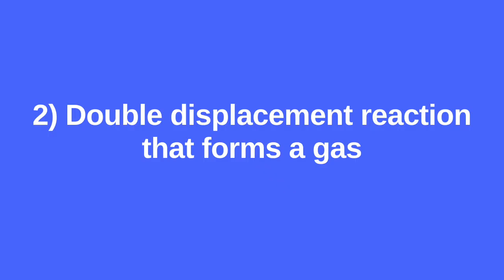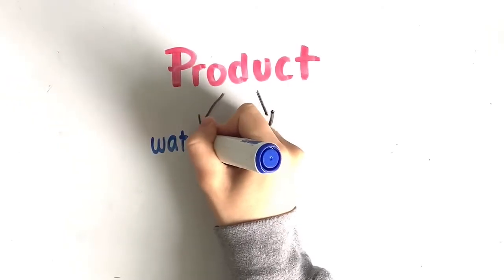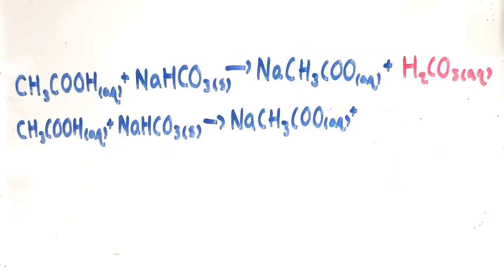Secondly, we have double displacement reactions that form a gas. During this reaction, one product quickly decomposes into water and gas. An example of this reaction would be acetic acid plus sodium bicarbonate yields sodium acetate plus carbonic acid.